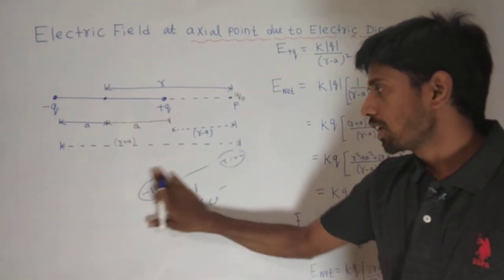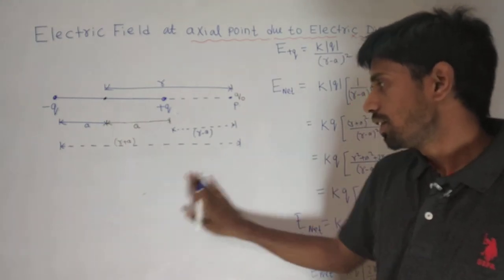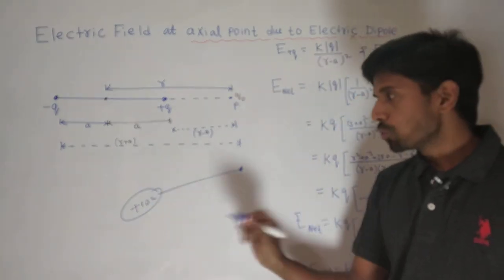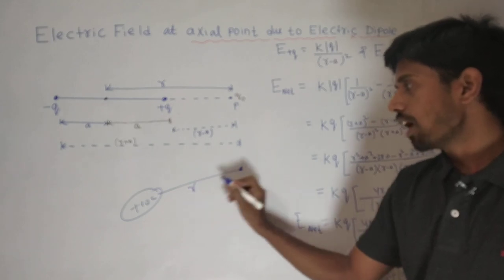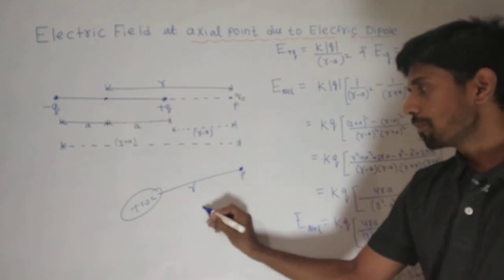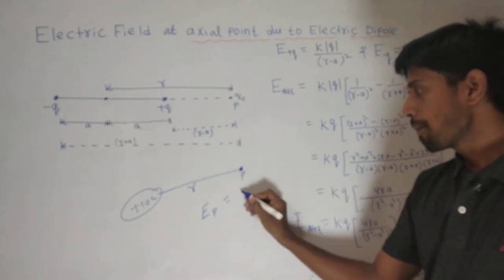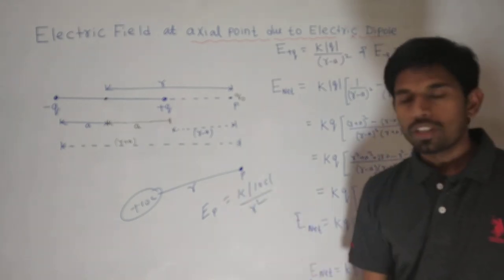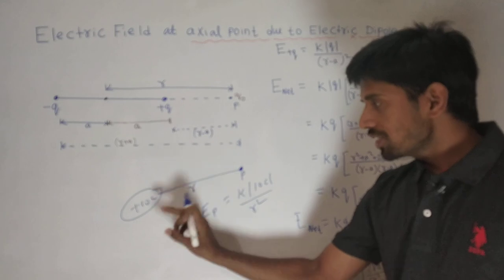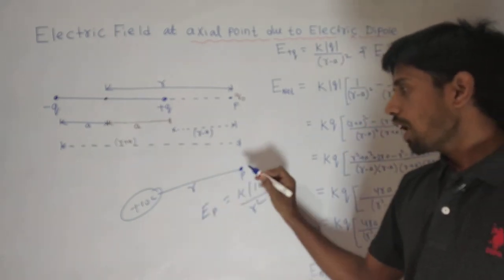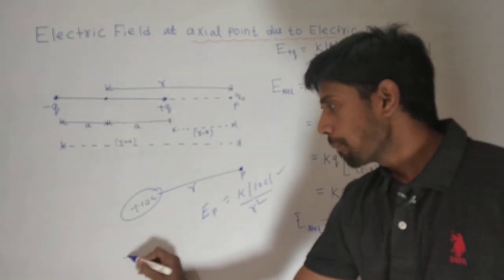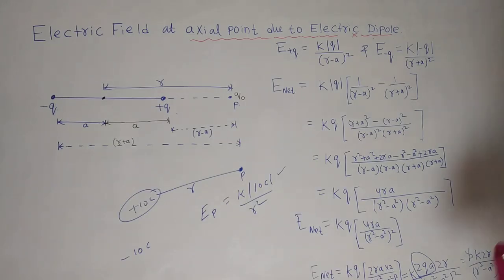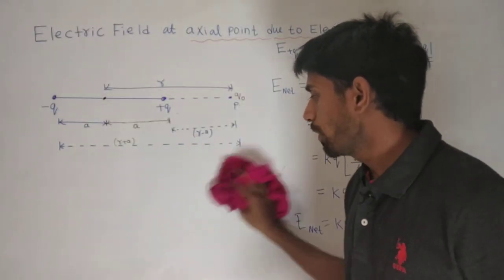There is one more thing I want to tell you. Suppose you have a single charge — that is, a plus 10Q charge. If I ask you to find the electric field at a point P at distance r, then you know the electric field at any point at distance r is given by K times the magnitude of the 10Q charge upon R square.